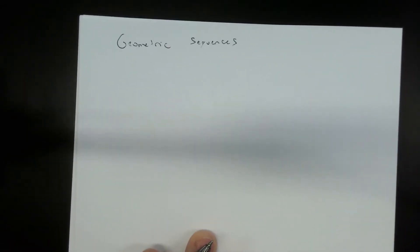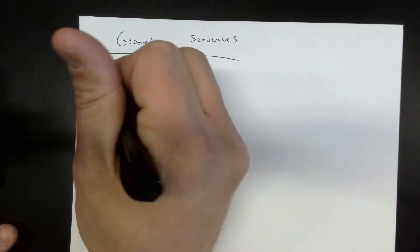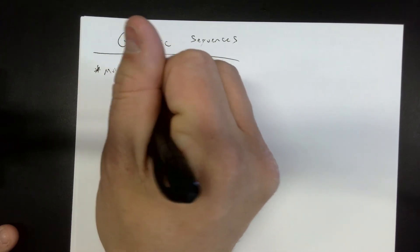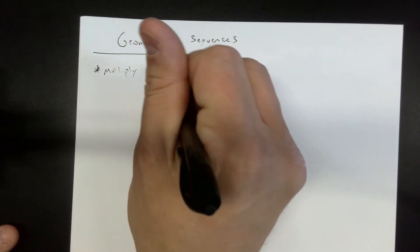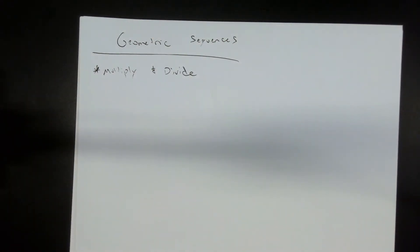Title it, Geometric Sequences. This is multiply and divide - those are going to be the two key things today. And I'll talk about what that means in just a second.